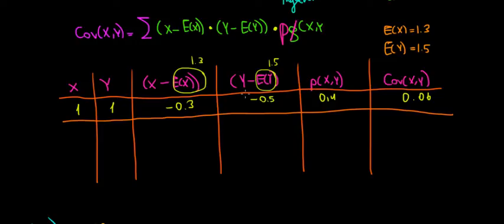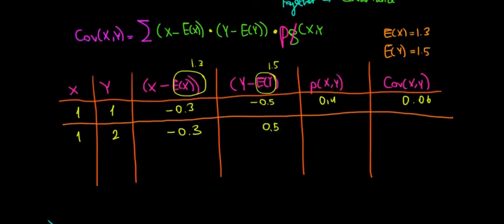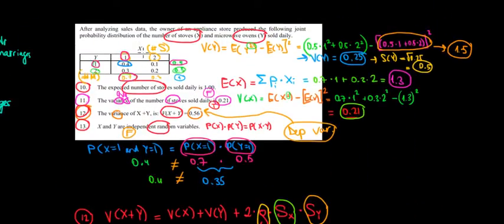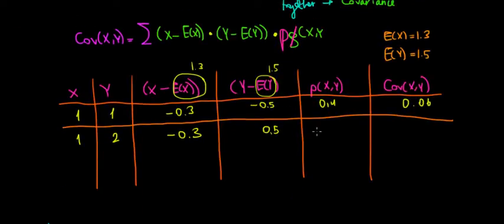With the same logic, we do the next combination: x=1, y=2. The difference between x and the expected value of x is again minus 0.3. The difference between y=2 and the expected value of y (1.5) is 0.5. The probability of x=1 and y=2 is 0.3. Multiplying: minus 0.3 times 0.5 times 0.3 gives us minus 0.045.